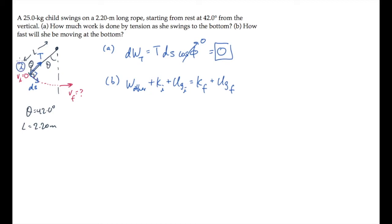The initial point is where she starts from rest up here, and the final point is where she is at the bottom of her swing. Work other is the work done by forces other than those we have a potential for. In this case, that would be the work done by tension, and tension does no work.